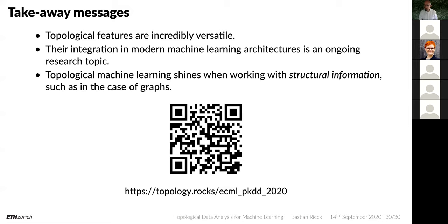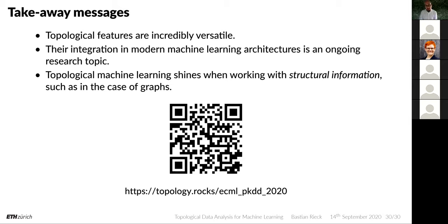Another question: you said topology is used a lot on graphs with Betti numbers — has anyone considered analyzing neural networks themselves using Betti numbers? For instance, if a hole in the neural network vanishes, could that indicate overfitting? Yes — we have a paper on exactly this topic called Neural Persistence, an ICLR 2019 paper.